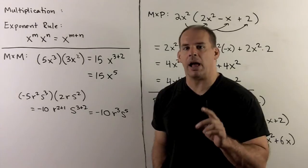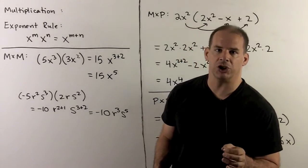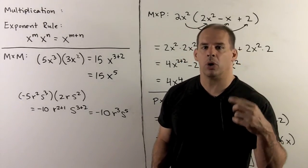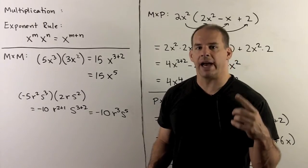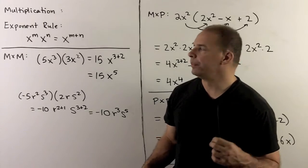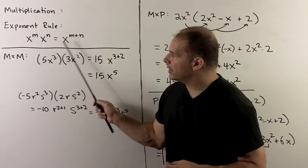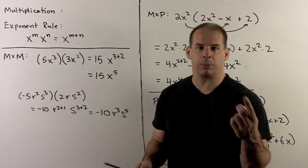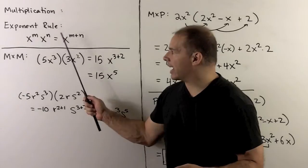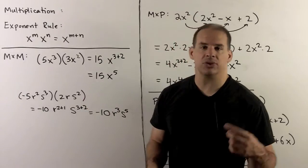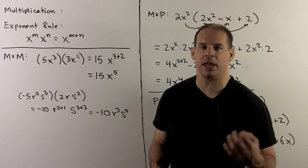Now that we can add and subtract polynomials, we consider multiplication. We approach this in stages. First, we recall the exponent rule. If we have expressions of some base to a power and we take products of the same base, we just add the exponents. So x to the m times x to the n is equal to x to the m plus n.